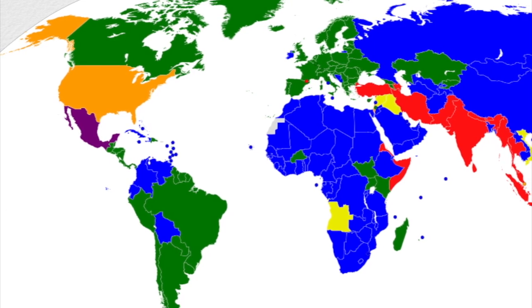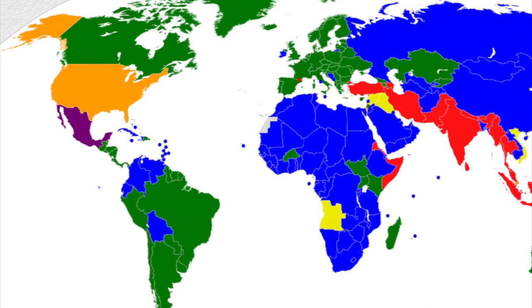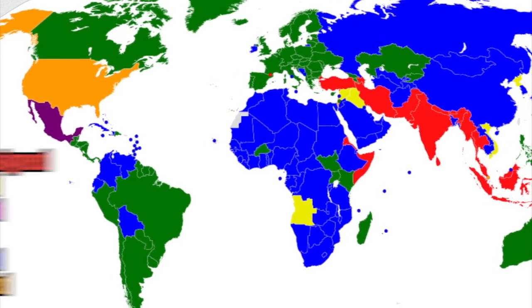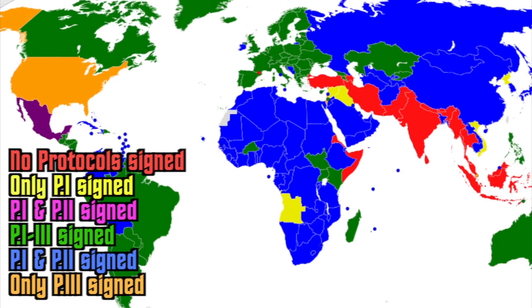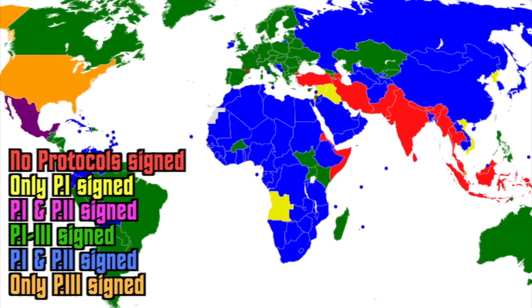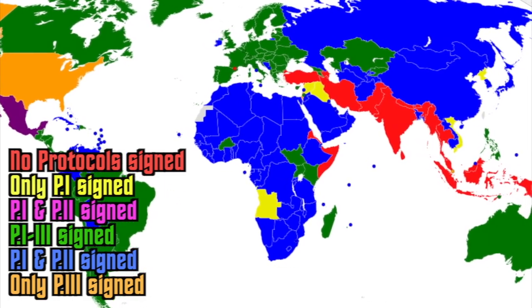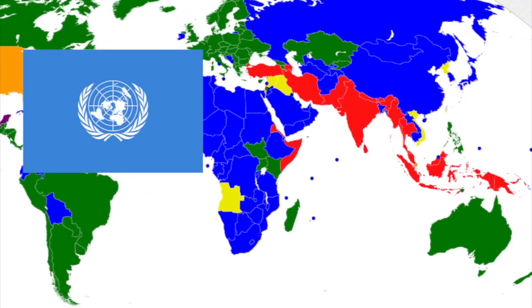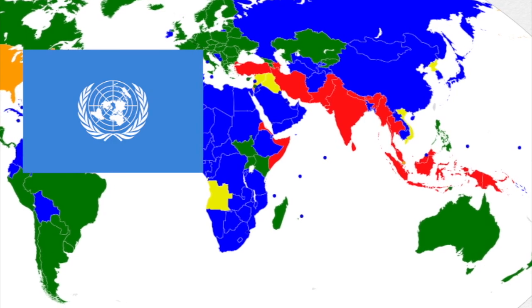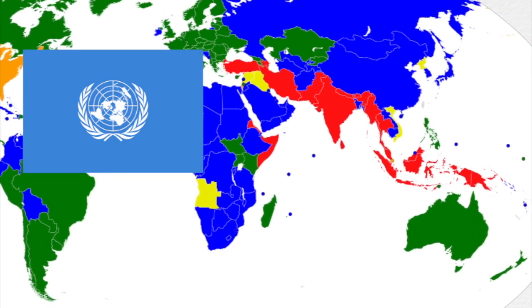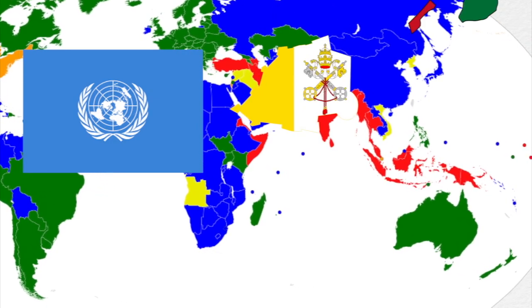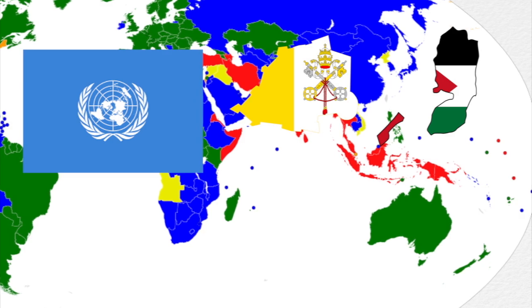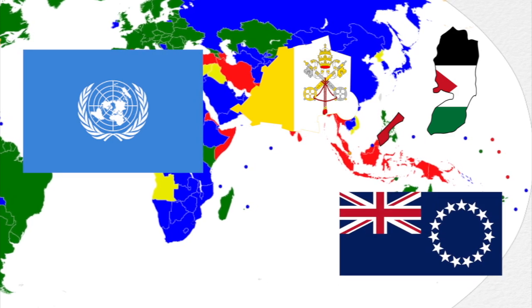In total, all four Geneva Conventions and one, two, three, or none of the protocols have been signed by 196 current sovereign governments, including every single member of the UN, plus the two UN observer states of Vatican City and Palestine, plus the New Zealand constituent country of the Cook Islands.